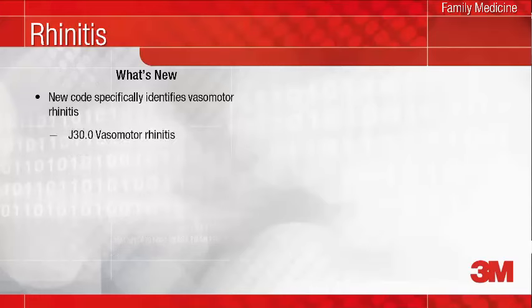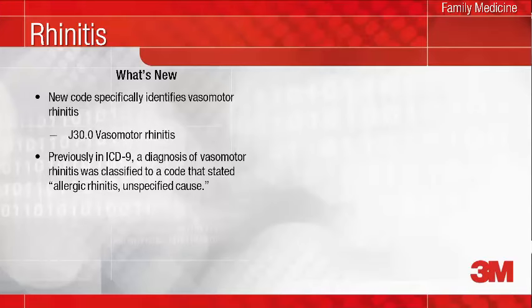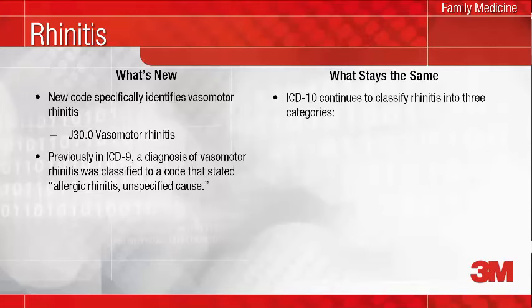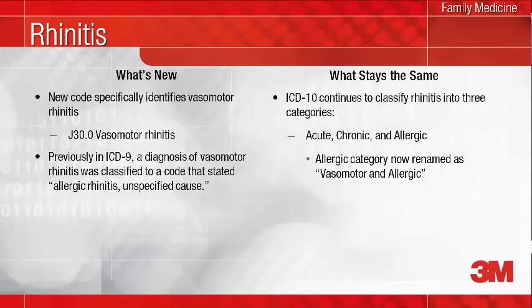ICD-10 provides a new code, J30.0, that specifically identifies vasomotor rhinitis. Previously in ICD-9, a diagnosis of vasomotor rhinitis was classified to a code that stated allergic rhinitis unspecified cause. As in ICD-9, ICD-10 continues to classify rhinitis into three categories: acute, chronic, and allergic. The allergic category is now named vasomotor and allergic to accommodate the new code. Consider that the more specificity you document regarding the cause or etiology of the condition, the more likely the treatment and interventions that you plan will have good outcomes.